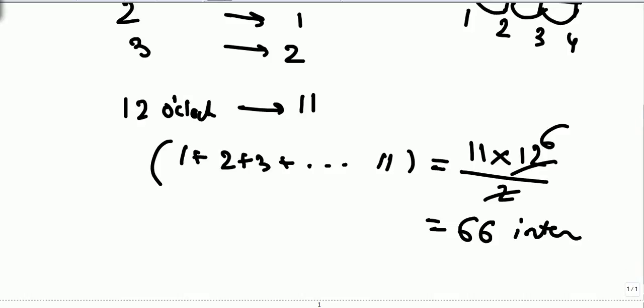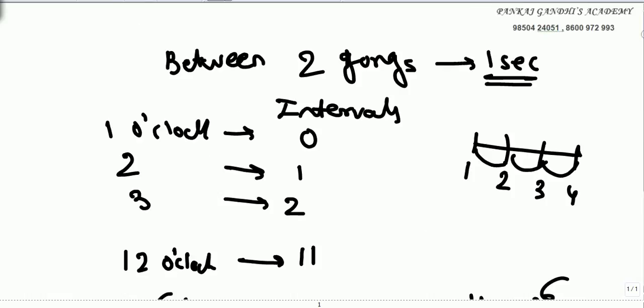So simply when the clock strikes with an interval of 1 second between the two gongs, the time difference is 1 second. When striking 1 o'clock there is going to be 0 interval. 2 o'clock between 2 gongs there is just going to be 1 interval. At 3 o'clock there are going to be 2 intervals.